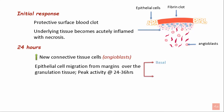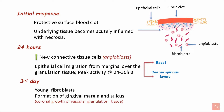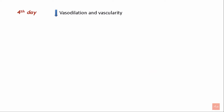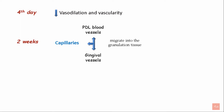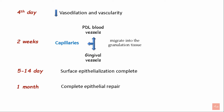Epithelial cells migrate from the basal and deeper spinous layers. On day 3, young fibroblasts are seen and formation of the gingival margin and sulcus is evident due to coronal growth of the vascular granulation tissue. On day 4, there is a decrease in vasodilation and vascularity. After 2 weeks, capillaries from the periodontal ligament blood vessels anastomose with the gingival vessels by migration into the granulation tissue. Surface epithelialization is complete by day 5 to 14. It takes 1 month for complete epithelial repair, and after 7 weeks, complete connective tissue repair occurs.